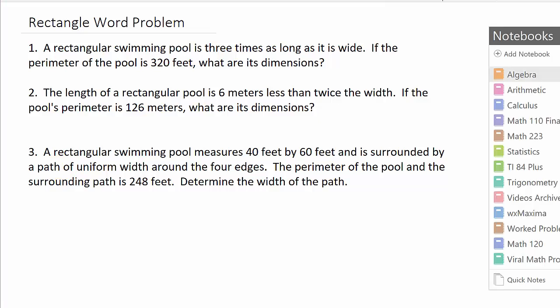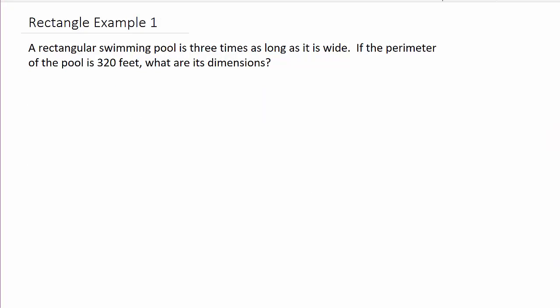Okay, so let's go ahead and look at this first example. It says a rectangular swimming pool is three times as long as it is wide. If the perimeter of the pool is 320 feet, what are its dimensions? Alright, so obviously the first thing we're going to do is we're going to come over here and draw a rectangular pool.